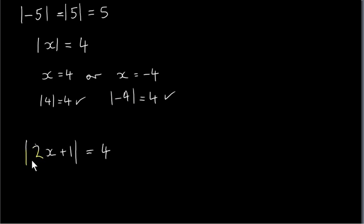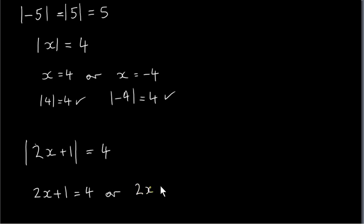Now we have this equation: the modulus of two x plus one equals four. We get two solutions depending on whether two x plus one equals plus four, or two x plus one equals minus four. If two x plus one is plus four, then the modulus of four is four — that checks out. If two x plus one is minus four, then the modulus of minus four is also plus four, so it checks out for both situations.